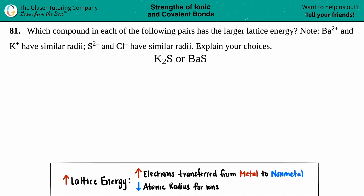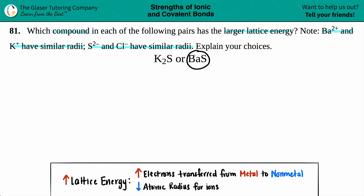Number 81: which compound in each of the following pairs has the larger lattice energy? Note that Ba²⁺ and K⁺ have similar radii, and S²⁻ and Cl⁻ also have similar radii. We have two ionic compounds here: potassium sulfide (K₂S) and barium sulfide (BaS). Which one has the larger lattice energy?